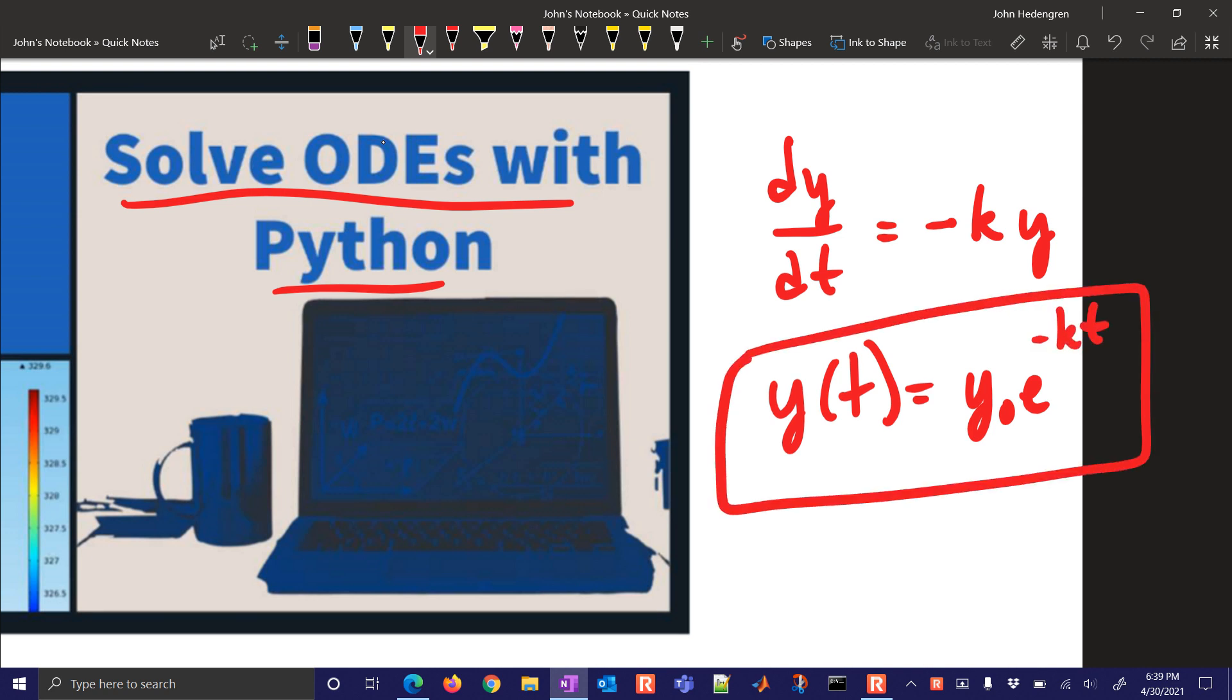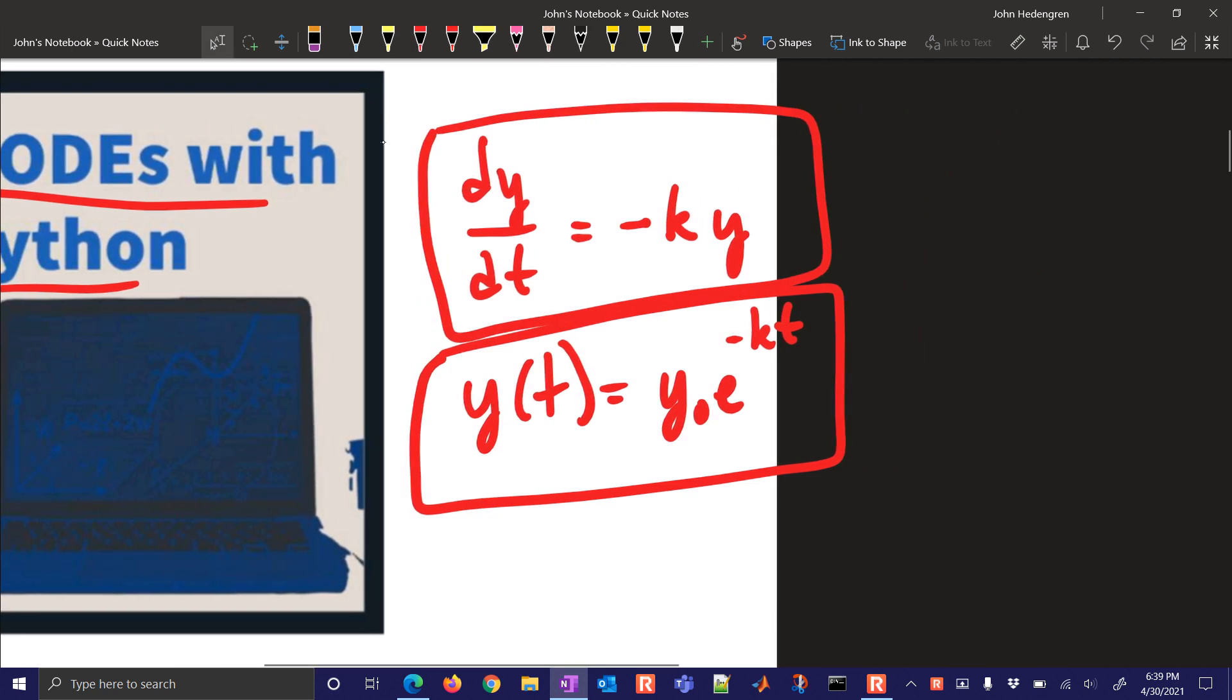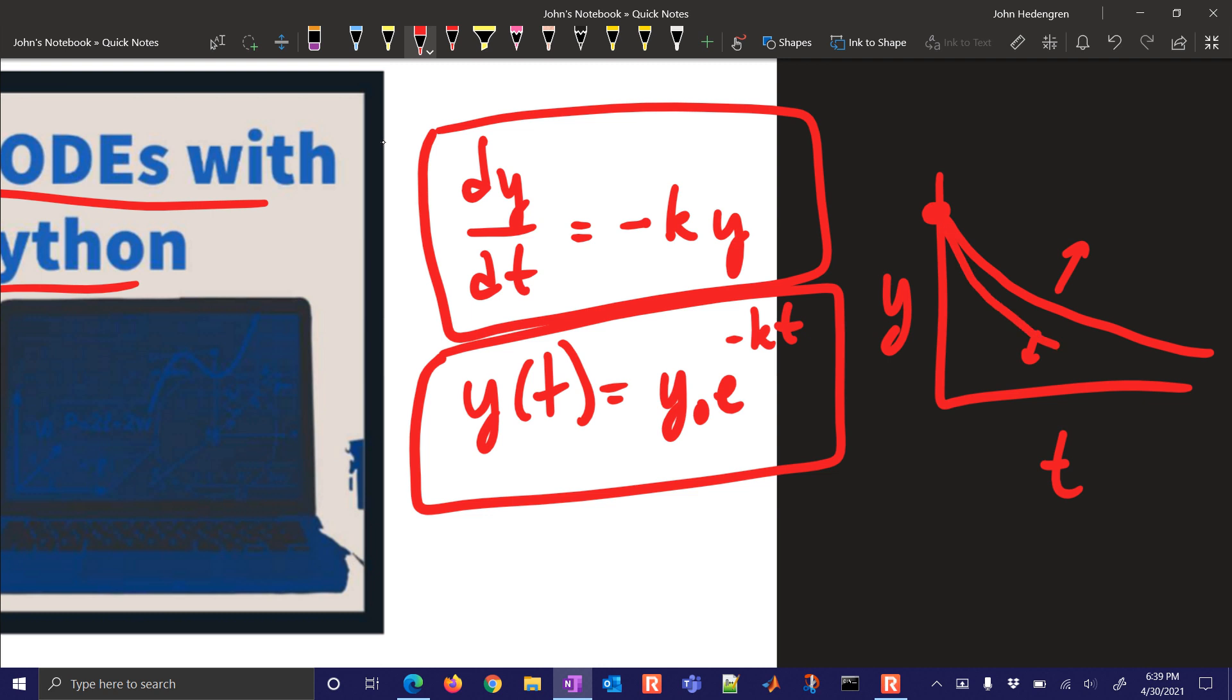Such as y naught e to the minus kt. And that you can do with methods such as separate and integrate, Laplace transforms, and others. But today we're going to show how to solve this numerically so that we get a solution as a function of time. So this is an exponential decay, and the value of k influences how quickly it goes to zero. We want to be able to solve that, and we're going to do it with Python.